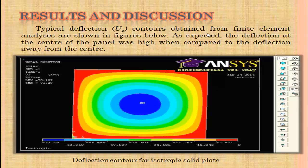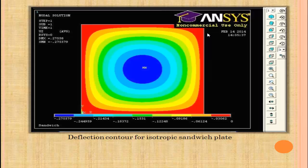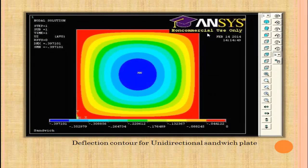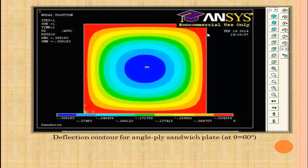Results and discussion: typical deflection contours obtained from finite element analysis are shown in the figures. As expected, the deflection at the center of the panel was high compared to deflection away from the center. Deflection for the isotropic solid plate: 71.29 inches. Deflection for the isotropic sandwich plate: 0.2755 inches. Deflection for the unidirectional sandwich plate: 0.3971 inches. Deflection for the cross-ply sandwich: 0.3911 inches. Deflection for the angle-ply sandwich plate at 60 degrees: 0.3091 inches.